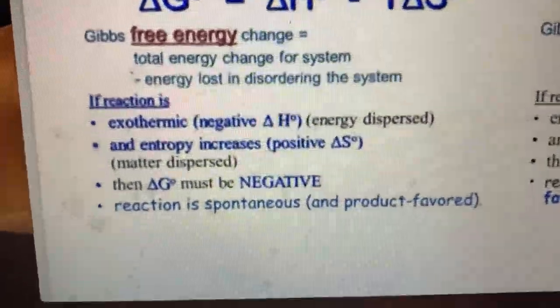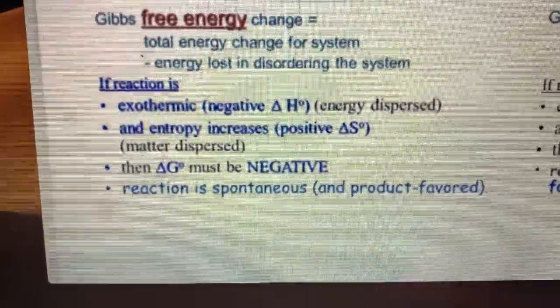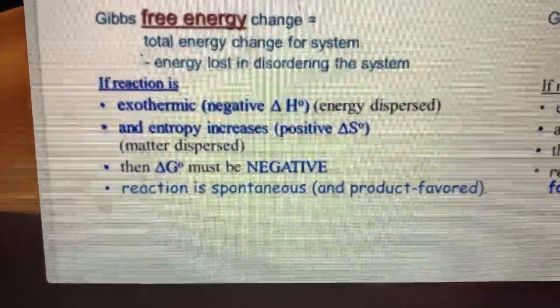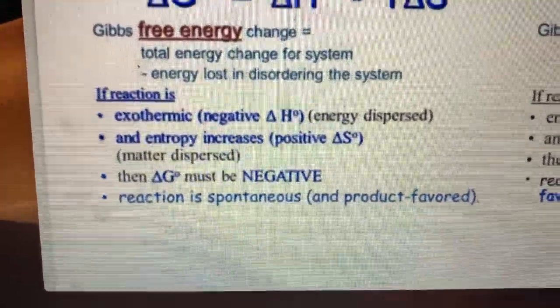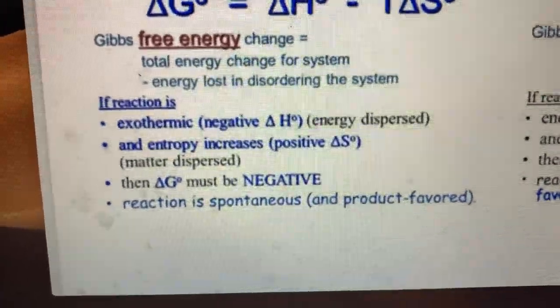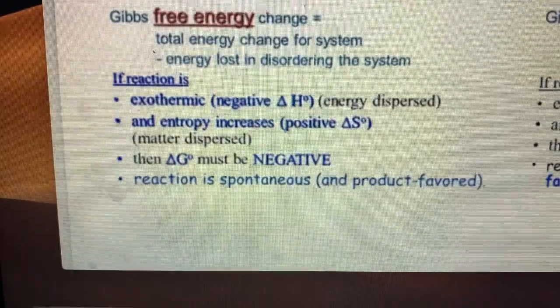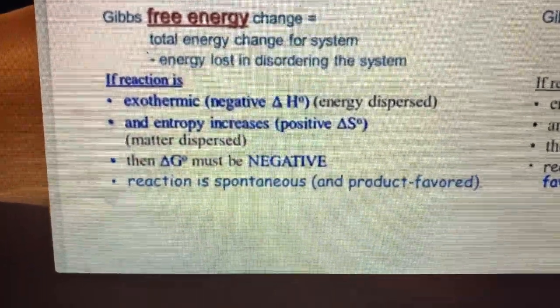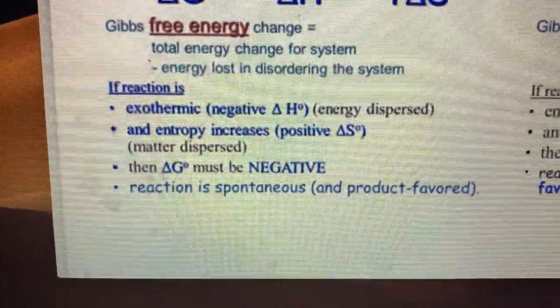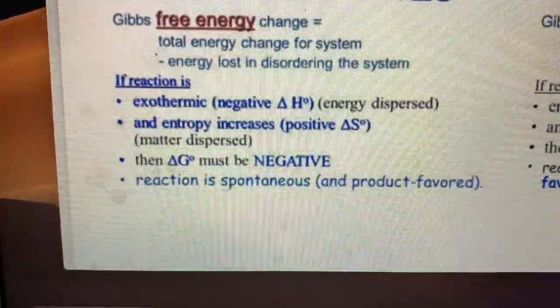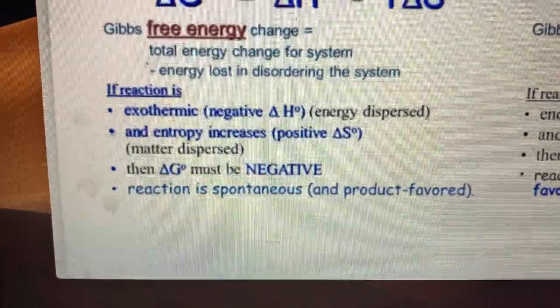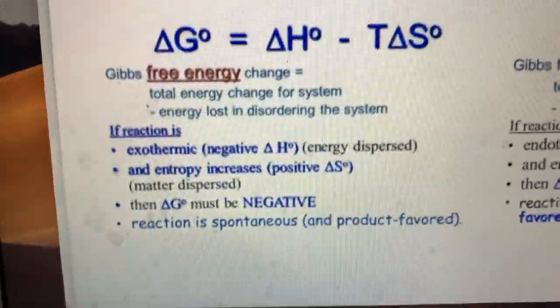If a reaction is exothermic with a negative delta H and the entropy increases with a positive delta S, then your delta G is going to end up being a negative value and the reaction is spontaneous. In other words, it's product favored, meaning it's going to occur on its own in the forward direction.